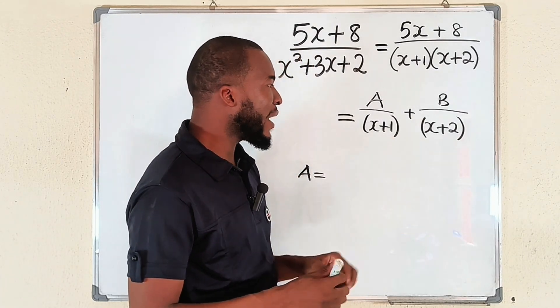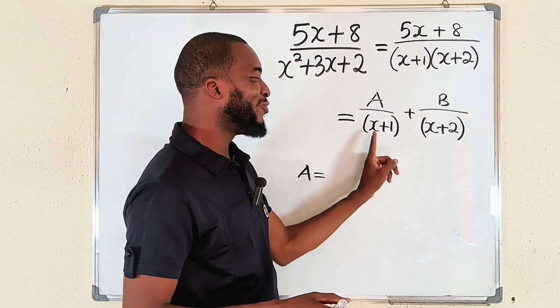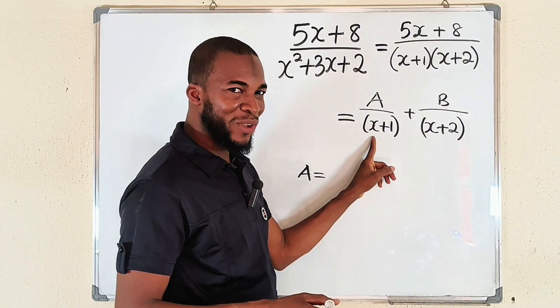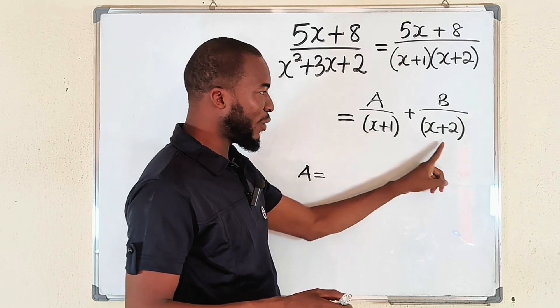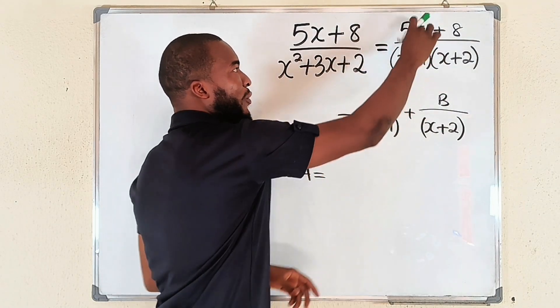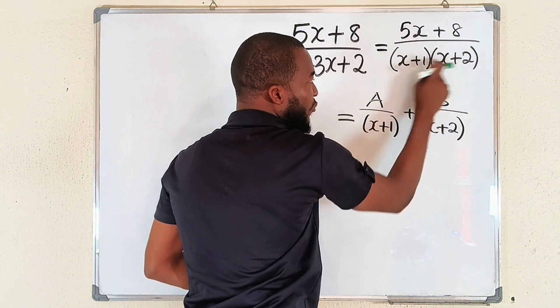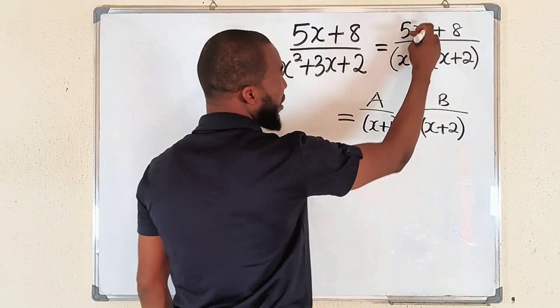So use that minus 1 to find the value of A, but do not use this factor again. We only use this factor to determine that value of x. We are going to use this one. Let me come back here to the top. Use this and this, do not use this one.